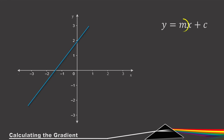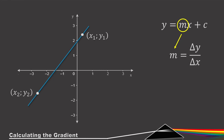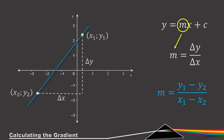The gradient is the m value — the coefficient of x — in the formula for a straight line. The formula for the gradient is the change of y over the change of x. To use the formula we need any two points on the line: we call them (x1, y1) and (x2, y2). The change of y is the difference between the two y values, and the change of x is the difference between the two x values. So the gradient formula is: m = (y1 − y2) / (x1 − x2).